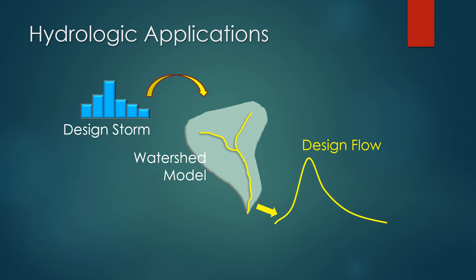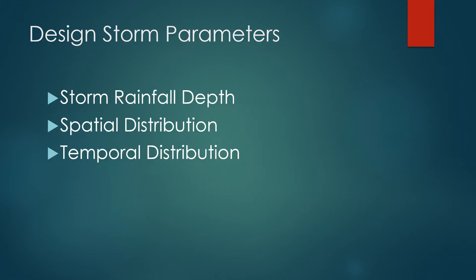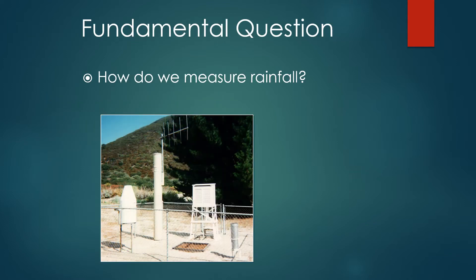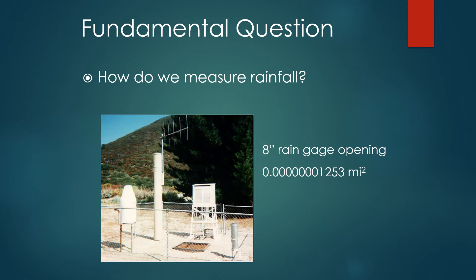The design storm includes specific parameters. We have to understand how much rain actually fell, how it was distributed over space, and how it was distributed in time. We measure rainfall typically with a rain gauge. An important thing to remember is that rain gauges only measure rainfall over a very small piece of real estate. Even with a relatively dense network of one gauge every 10 square miles, you're measuring parts per close to a billion in terms of representing rainfall over a large area.